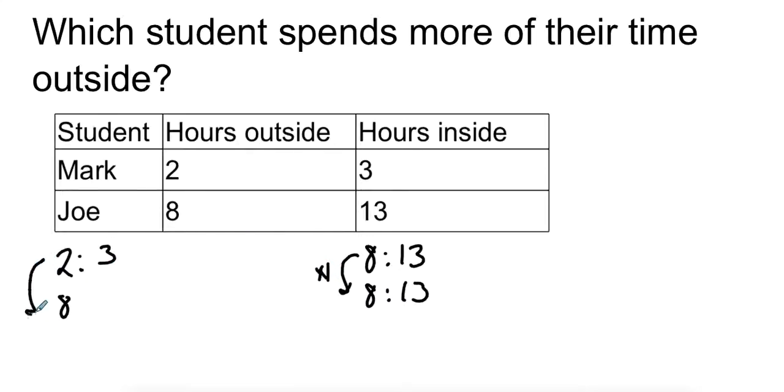But for here, we had to multiply by 4 to get the number of hours outside to match Joe's. So I have 4 times the amount of hours outside, which means I also have 4 times the amount of hours inside. So I can actually see that Mark is the student who spends most of their time outside because while they have the same number of hours outside, Mark spends a little bit less of his time inside.